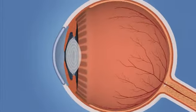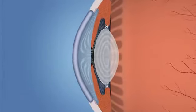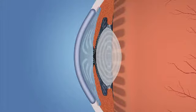In the healthy eye, a clear liquid called aqueous humor circulates inside the front portion of the eye.